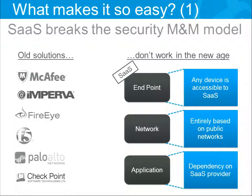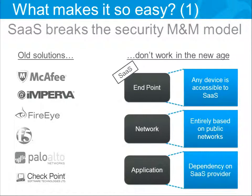The second thing that makes everything so easy in SaaS attacks is that SaaS breaks the security model in a very fundamental way. All of our security controls are built around this crunchy M&M concept — crunchy on the inside, very hard on the outside. But with SaaS, everything is inside-outside; you don't have any perimeter anymore. Most of the security controls we have today — endpoint controls, network controls — are not relevant. The endpoints in the SaaS organization don't get endpoint security, the network doesn't get network security, and the applications don't get application security.